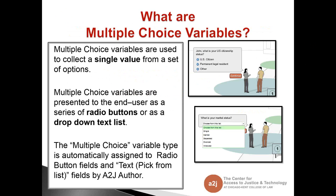So what are multiple choice variables? Multiple choice variables are used to collect a single value from a set of options. They are presented to the end user as either radio buttons or a drop-down text list. The multiple choice variable type is automatically assigned to radio buttons and to text pick from a list fields by A to J Author. Multiple choice questions seek a single answer from the end user — only one option can be selected.